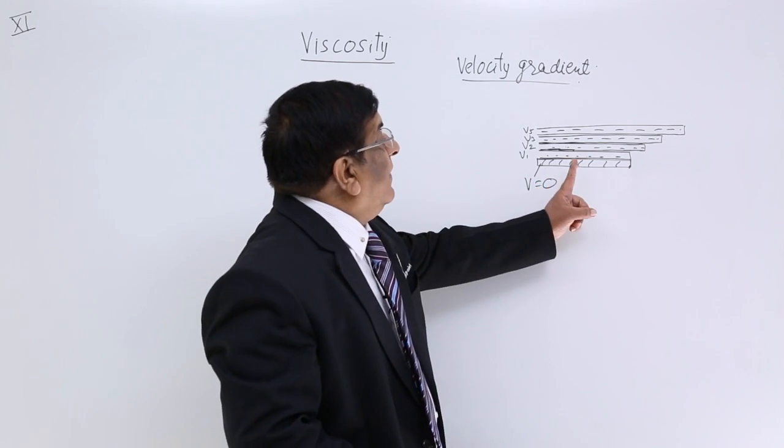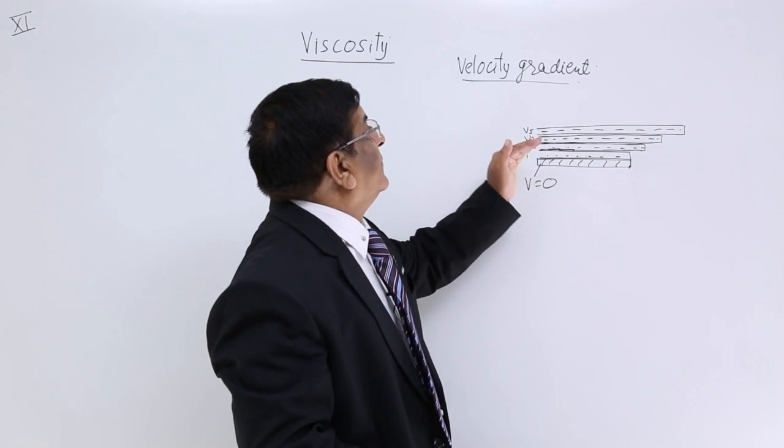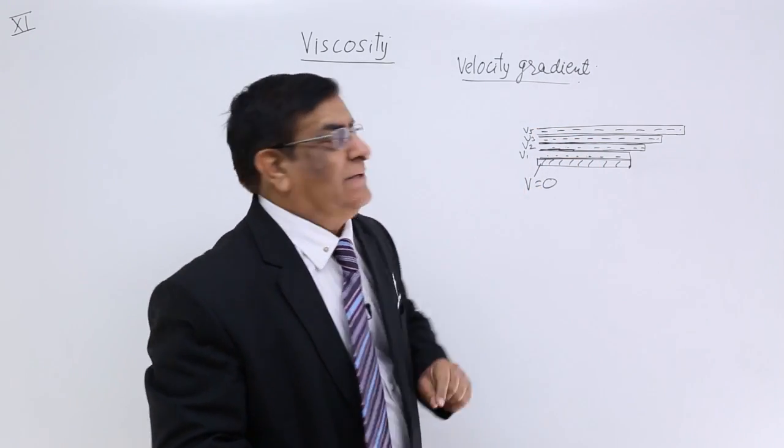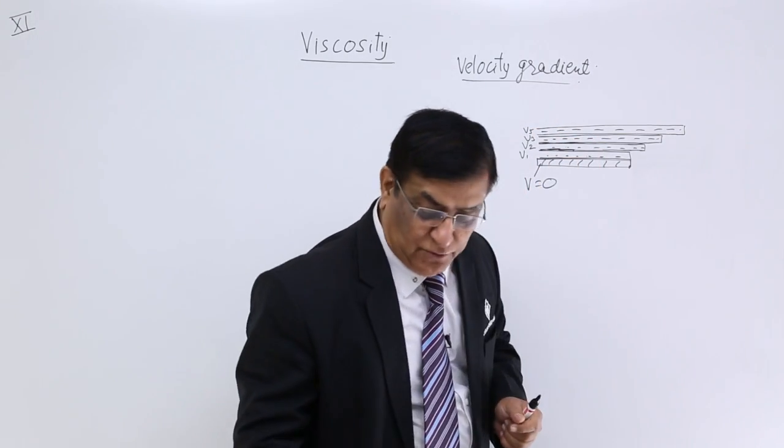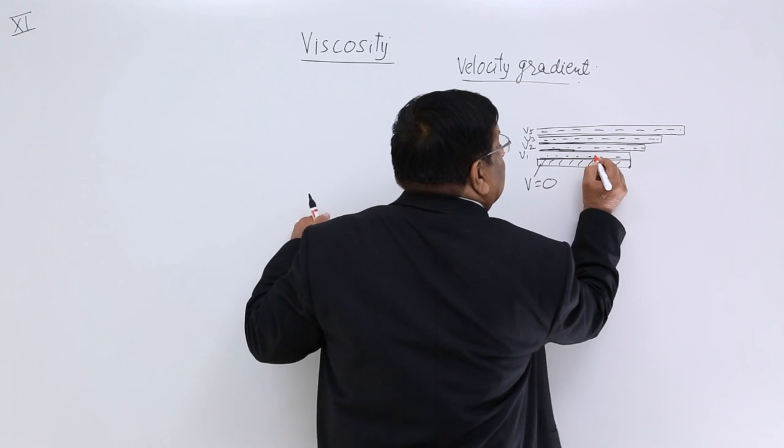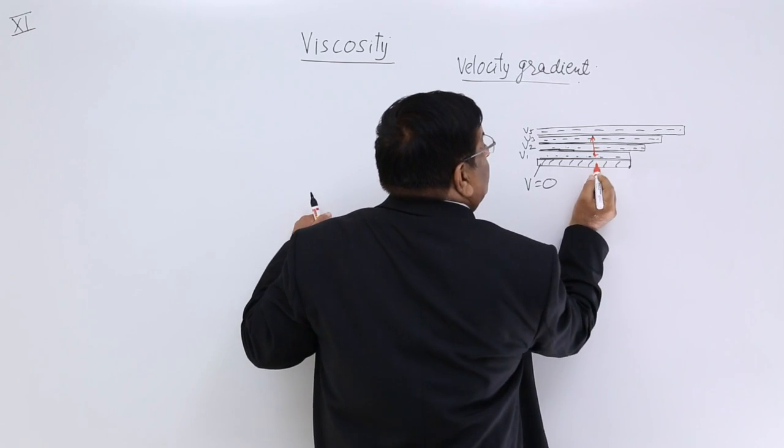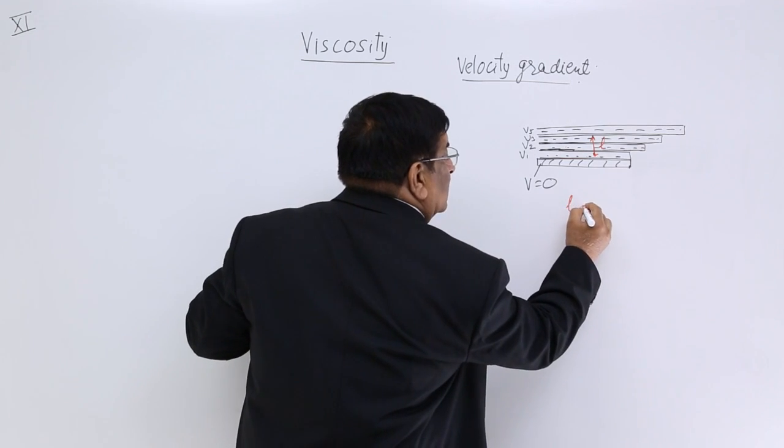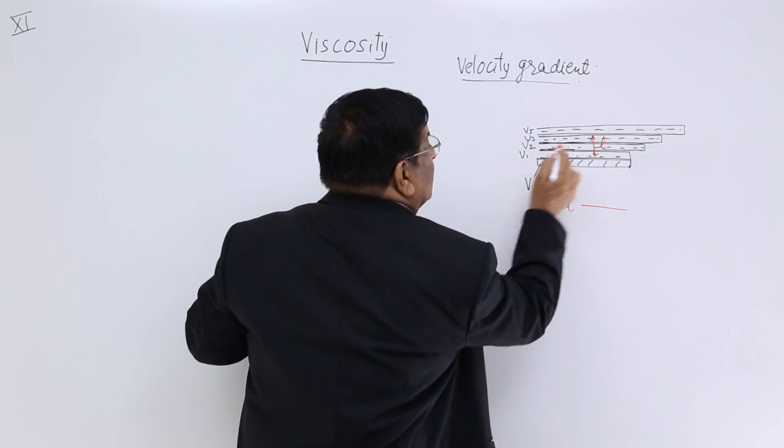So when we go up, the velocity goes on increasing. And here we take a measurement. Suppose we have gone to a particular height, this height is L. Then, with L height, how much velocity has increased? V1 to V3.